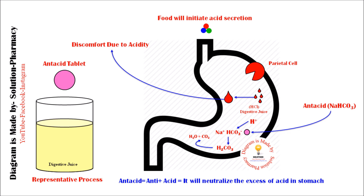This makes antacids different from other acid-reducing drugs like H2 blockers — also called H2 receptor antagonists — or proton pump inhibitors. Those agents inhibit the secretion of acid in the stomach, whereas antacids only neutralize the acid which has already been secreted.